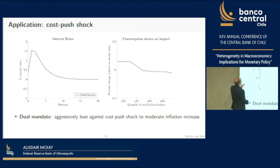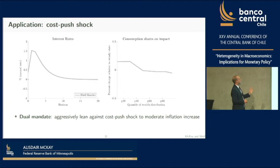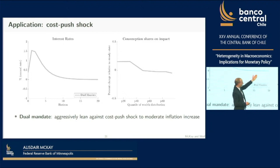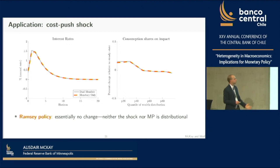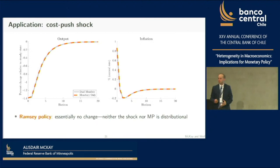Consumption responds very differently to these checks: low-wealth people increase their consumption strongly in percentage terms both because they have a high MPC and because $500 is a big deal for them, while for a rich person $500 is not a large percentage. Next, looking at a cost push shock: under the dual mandate, interest rates rise to fight inflation. Consumption shares shift slightly—low-income guys increase their share, likely through asset revaluation effects—but the magnitude is not extremely large. Ramsey monetary policy does almost identical policy to the dual mandate here.